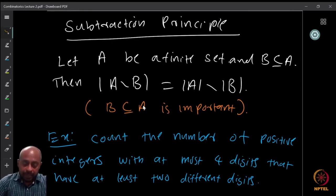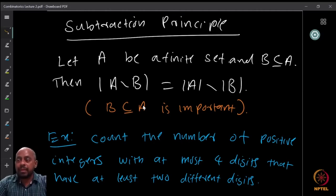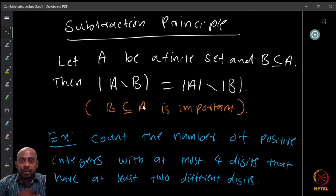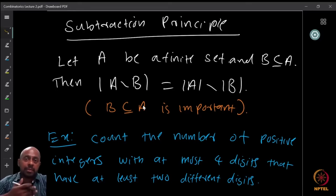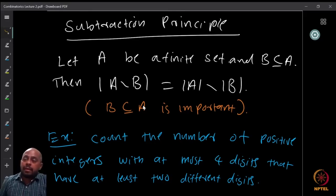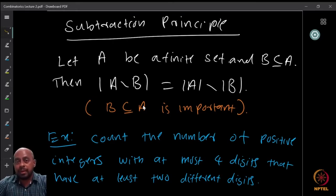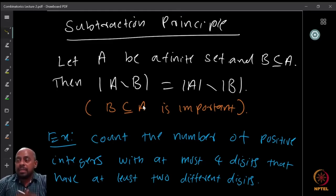Here is an example: count the number of positive integers with at most four digits that have at least two different digits. One can count this directly, but it is more efficient to use the subtraction principle. I recommend pausing to try a direct count first so you can appreciate why the subtraction approach is better.